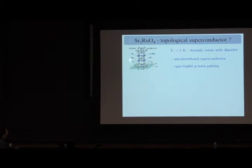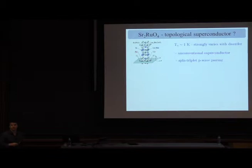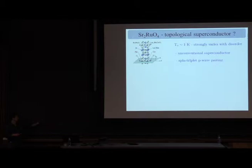This is the realistic structure: strontium atoms, ruthenium atoms, and oxides — very similar to high-TC materials, but the transition temperature is actually very low. We know it is an unconventional superconductor because TC strongly varies with disorder. Most superconductors, with the exception of S-wave, are very sensitive to disorder, and when the gap becomes comparable to the scale 1/τ, most superconductors are destroyed by disorder. That is the hallmark of an unconventional superconductor.